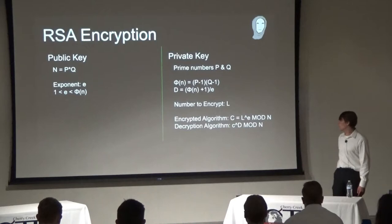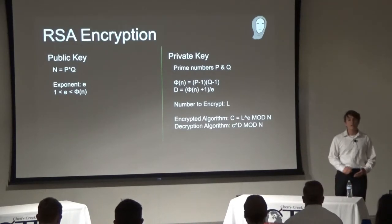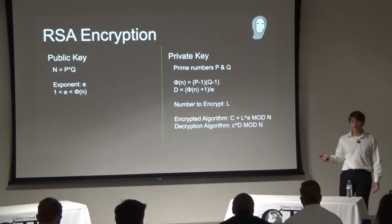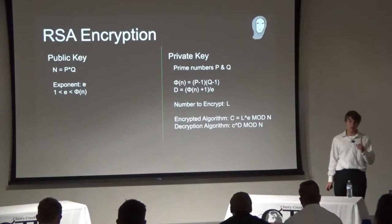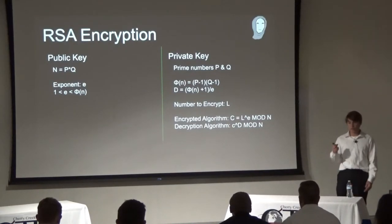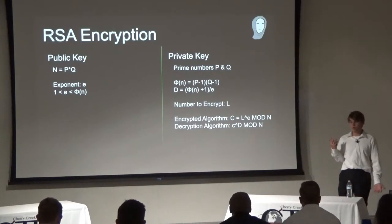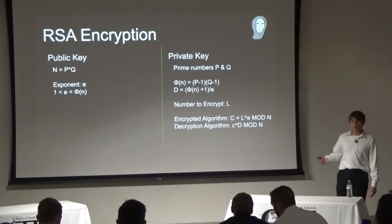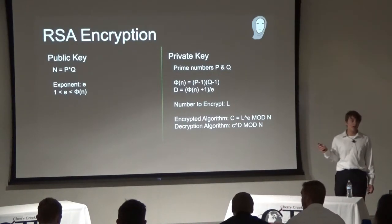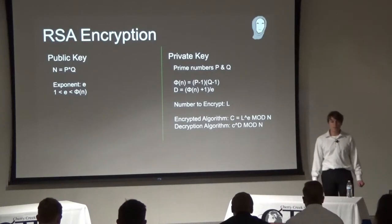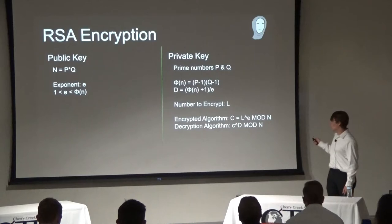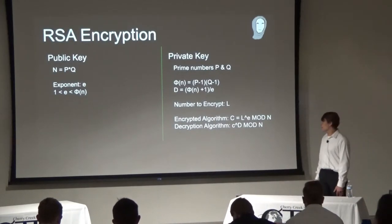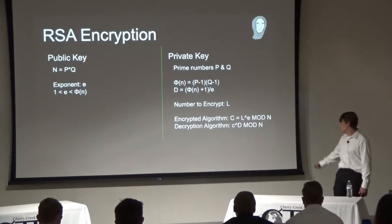Another very important part of RSA encryption is modular division — basically division but with remainders. For example, 5 mod 2 equals 1, because 5 divided by 2 has a remainder of 1. And 7 mod 5 equals 2. This is crucial for encryption because many different numbers can produce the same remainder, so you cannot work backwards — you can't look at a remainder and determine what number someone started with. This prevents anyone from reverse-engineering the private key variables like p, q, or d.